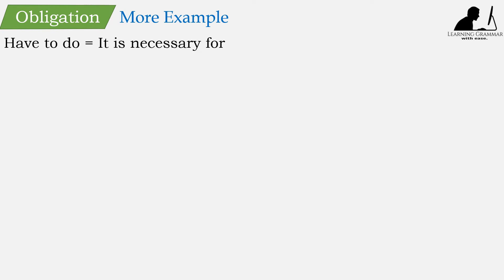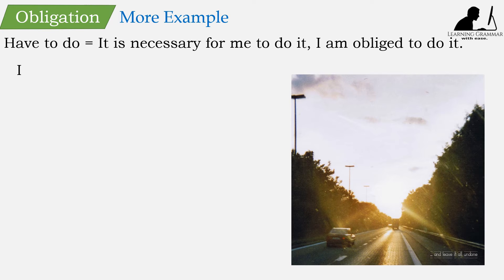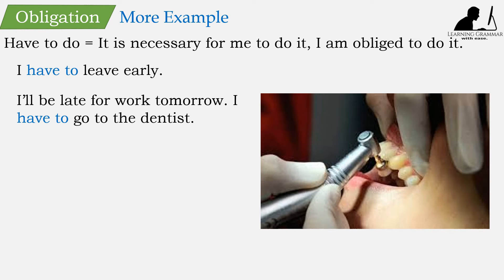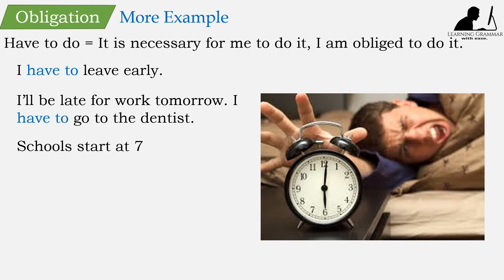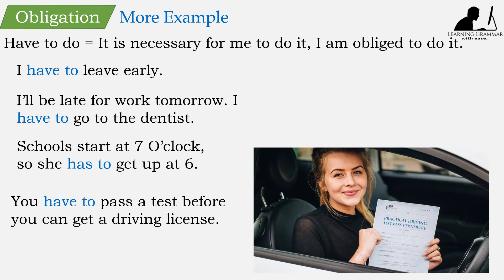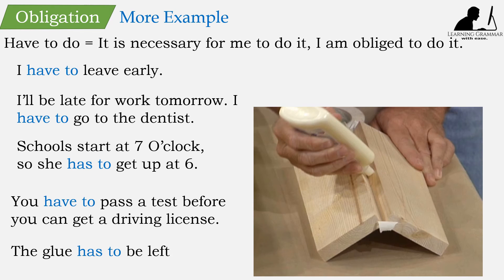'Have to do' means it is necessary for me to do it — I am obliged to do it. For example: I have to leave early. I'll be late for work tomorrow. I have to go to the dentist. Schools start at 7 o'clock, so she has to get up at 6. You have to pass a test before you can get a driving license. The glue has to be left to dry for 24 hours.